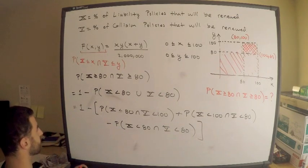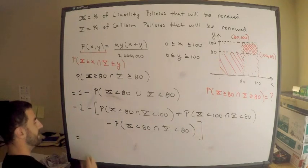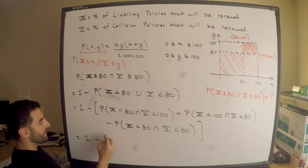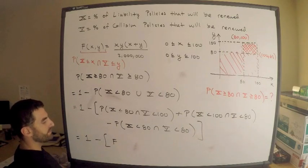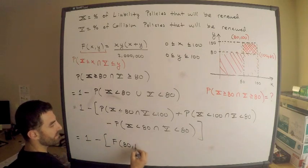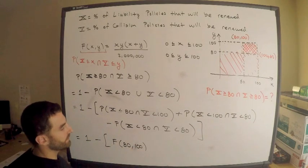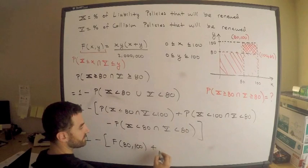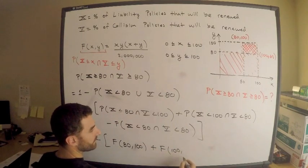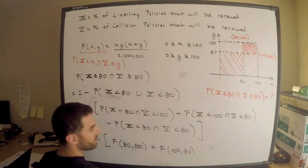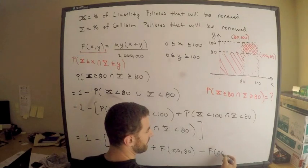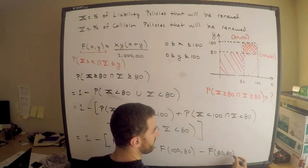So this is equal to the following. By definition, this is equal to 1 minus, parentheses, the CDF evaluated at 80 comma 100, right? Plus the CDF evaluated at 100 comma 80, and now I need to minus the CDF, the joint CDF evaluated at 80 comma 80.